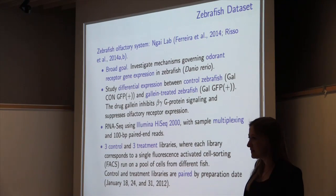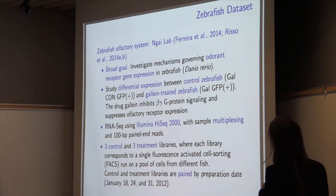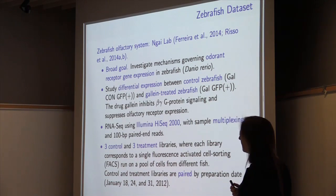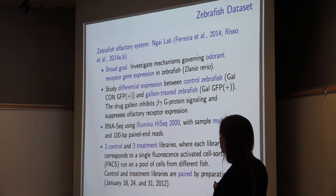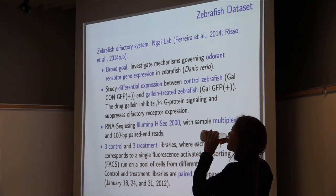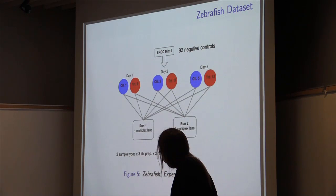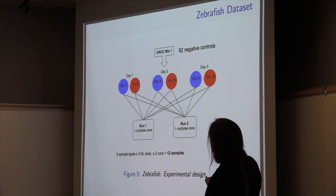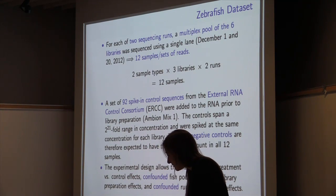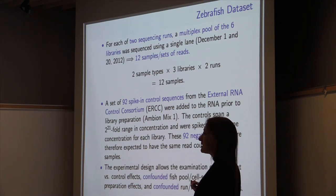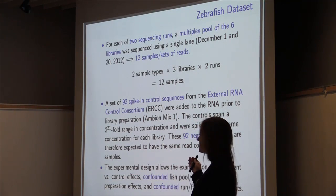Another dataset — a real messy one — comes from our collaborators in the Ngai lab at Berkeley. They're studying gene expression in the olfactory system of the zebrafish, looking at differential expression between control fish and galant-treated fish, using Illumina HiSeq 2000 and multiplexing. We have three control libraries and three treated libraries. The six libraries were pooled and sequenced in two runs in multiplex, giving us 12 samples total — two sample types (treated/untreated) × three library preparations × two runs. We also have ERCC spike-ins, but only Mix 1 — so we only have negative controls, which should be constantly expressed across our 12 samples.